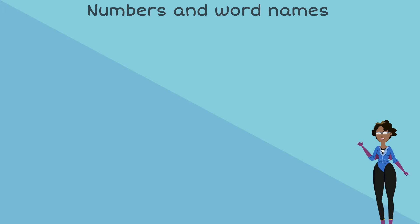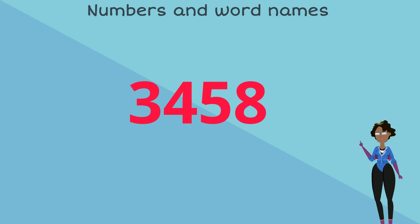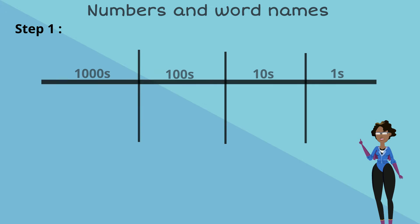Let's look at this example. Let's write the name of the number shown on the screen. Step 1: Let's insert the numbers into the place value table.